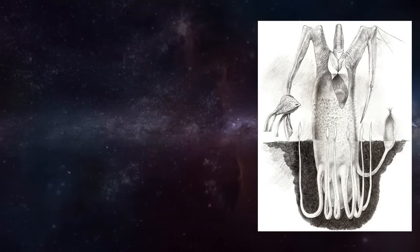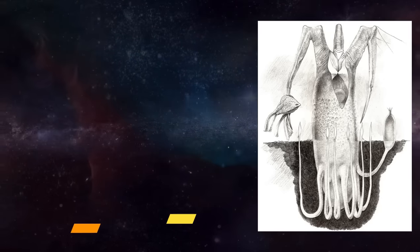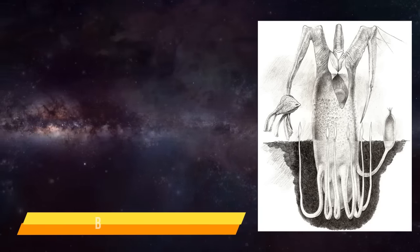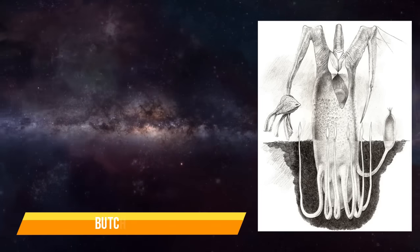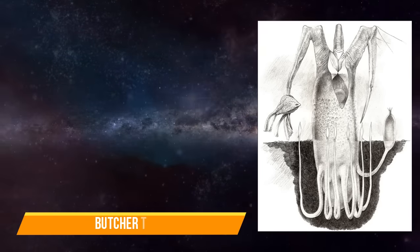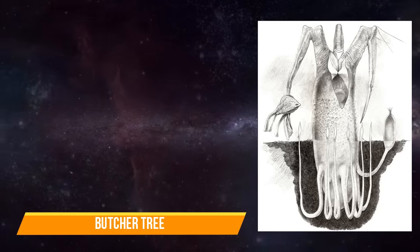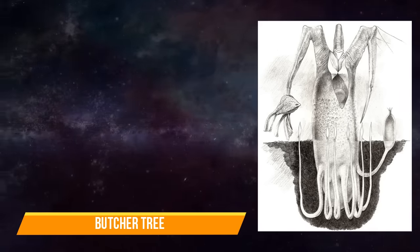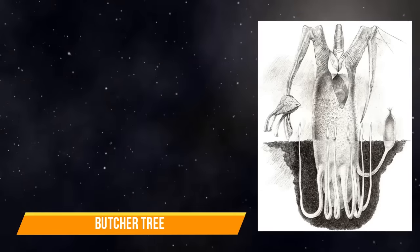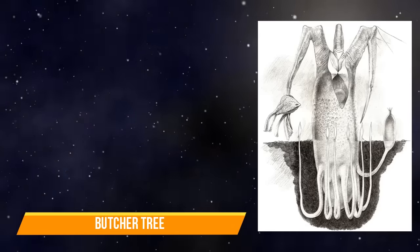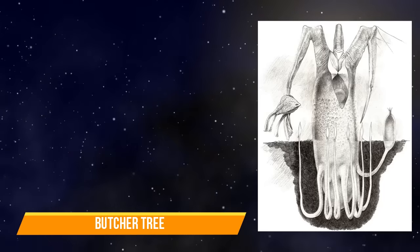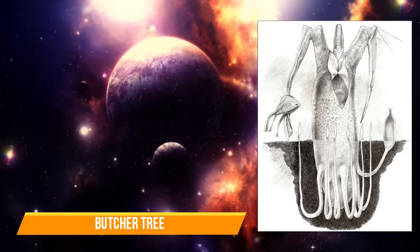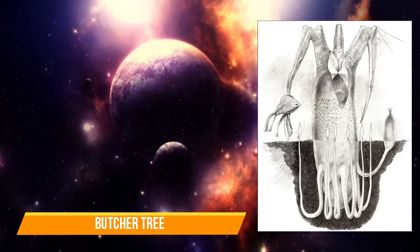Butcher Trees are sessile organisms indigenous to Darwin IV. While many species prey on the numerous and fast-breeding prismalope, butcher trees are the only species to actually lure the prismalope instead of giving chase, although they also feed on the great skewers as well. Dotting the plains of the planet's northern hemisphere, they will kill anything that comes within their attack range with four branch daggers. They possess a bizarre symbiotic relationship with a currently unnamed aerial organism — the primary food source of the prismalopes — growing subterranean roots that resemble these fliers, allowing the tree to lure prismalopes close enough to kill them.